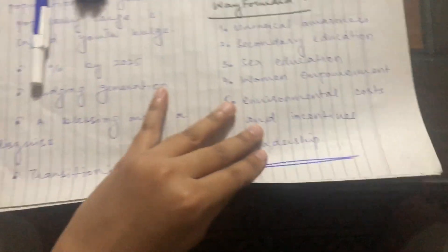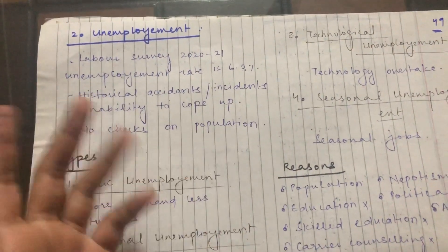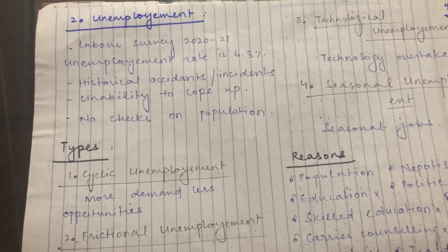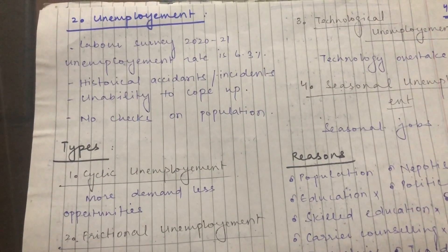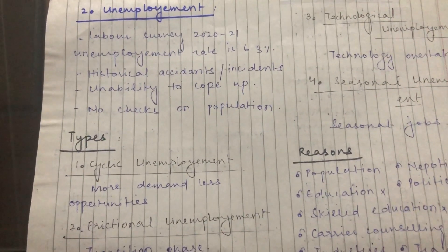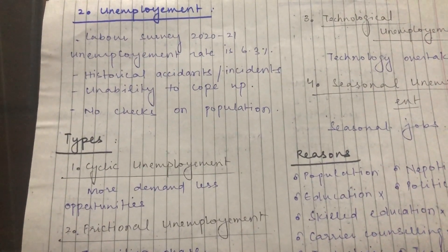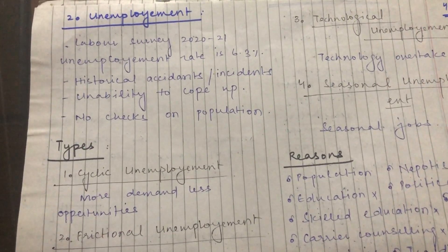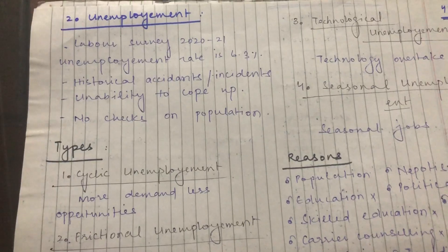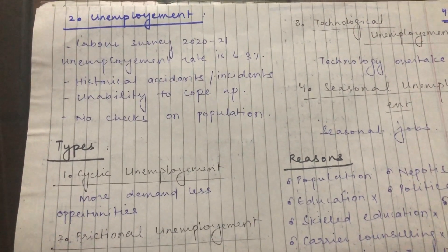The next social problem is unemployment, which is one of the biggest social problems. According to the Labor Survey 2021-2022, the unemployment rate in Pakistan is 6.3%. Different analysts note that Pakistan has faced different historical incidents and has not been able to cope with them, which is why unemployment is growing unchecked. Pakistan has not been able to control its unemployment rate, and the economic conditions are worsening.